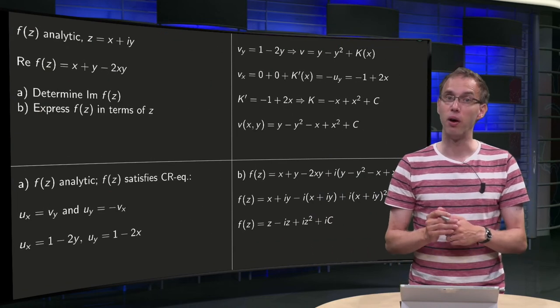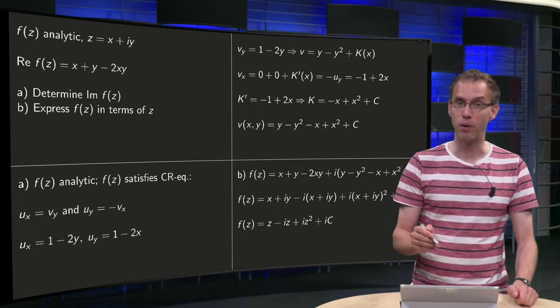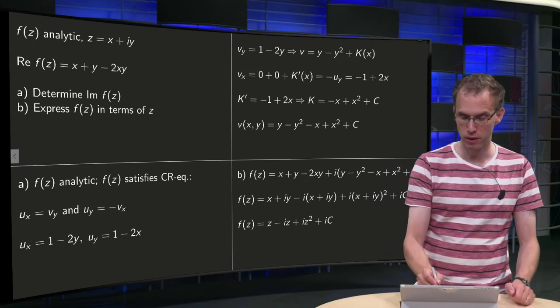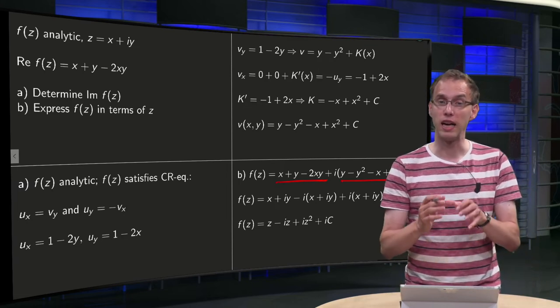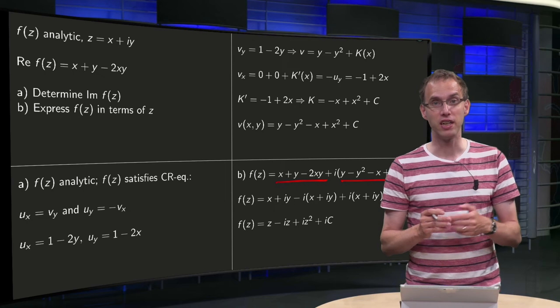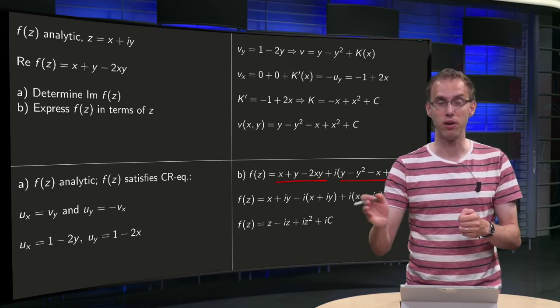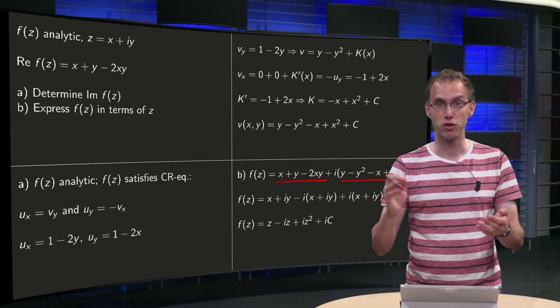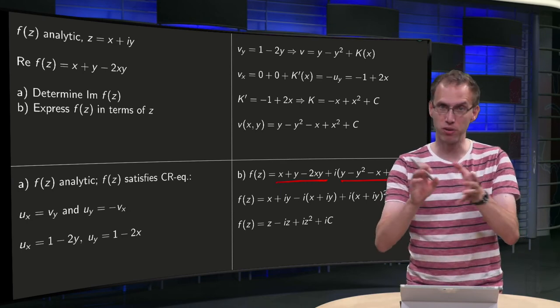Then part B: we want to express f in terms of z. We know f(z) = u + iv, and now we want to express this in terms of z = x + iy. In general you can solve x in terms of z and z conjugate, and y also in terms of z and z conjugate, and then substitute x and y, and then you can find it.